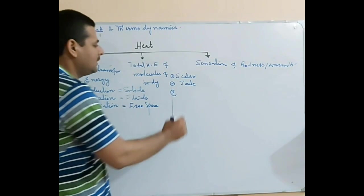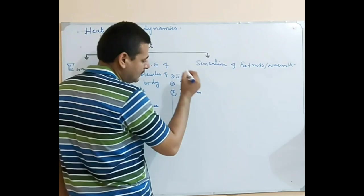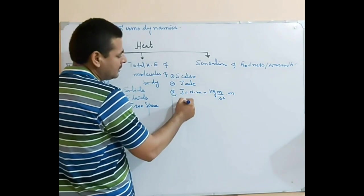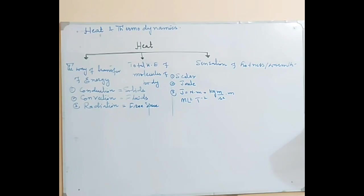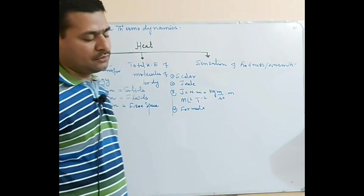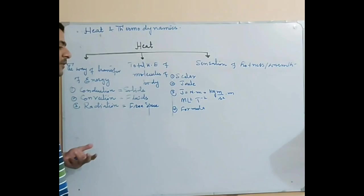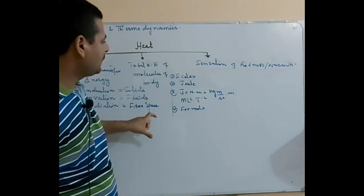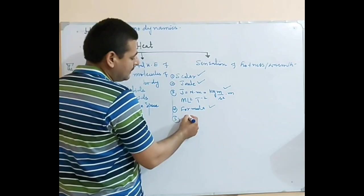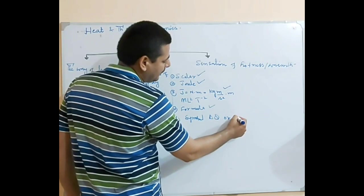Third, we use dimensions. Heat is energy, and energy has dimensions. The dimension of heat is expressed in terms of mass (kilogram), length (meter), and time. The formula for heat depends on whether we are discussing heat capacity or specific heat. In this chapter, the heat symbol is delta Q, or sometimes it is represented differently.